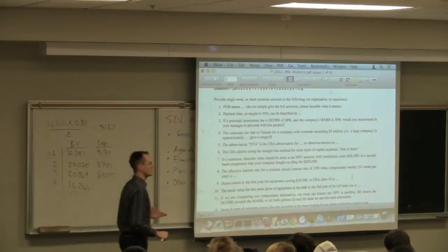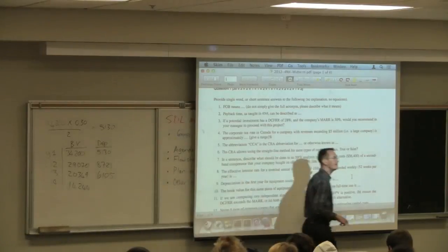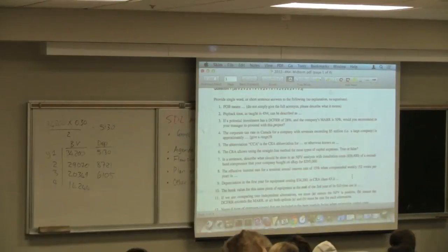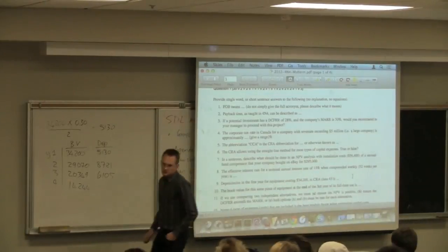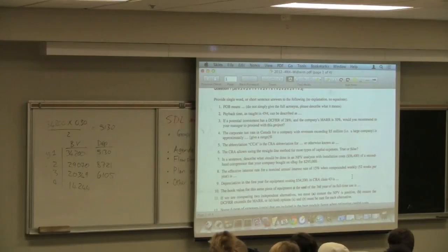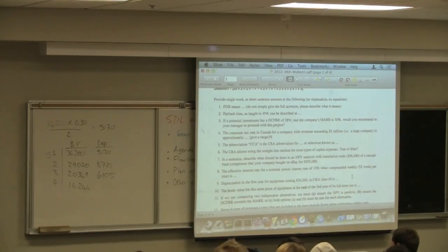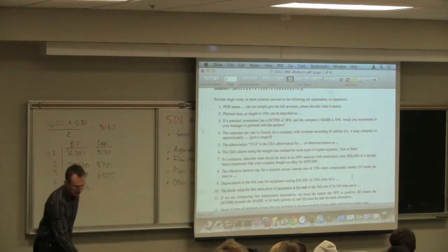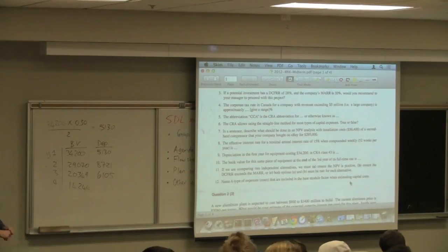So the answer was $14,244. So if we're comparing two independent alternatives, do we ensure that NPV is positive, DCFRR exceeds MARR, or both? Both. So we require both for independent alternatives.